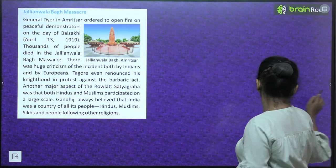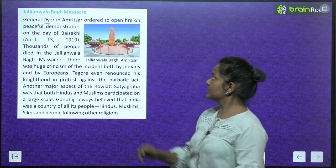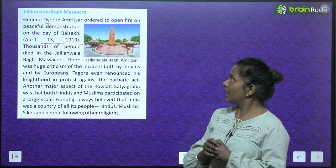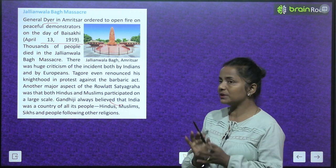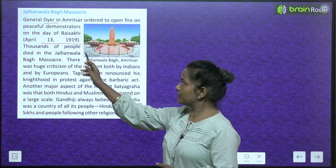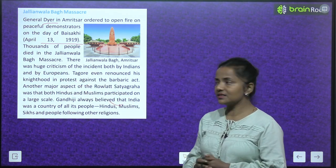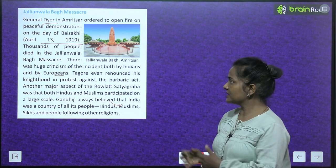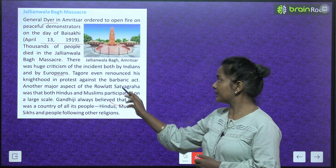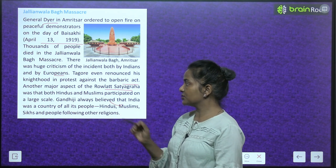The Jallianwala Bagh Massacre: General Dyer in Amritsar ordered to open fire on peaceful demonstrators on the day of Baisakhi, April 13, 1919. Thousands of people died in the Jallianwala Bagh massacre. There was huge criticism of the incident both by Indians and by Europeans. Tagore even renounced his knighthood to protest against the barbaric act. Another major aspect of the Rowlatt Satyagraha was that both Hindus and Muslims participated on a large scale. Gandhiji always believed that India was a country of all its people — Hindus, Muslims, Sikhs and people following other religions.